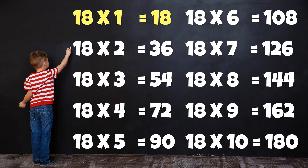Table of 18: 18×1=18, 18×2=36, 18×3=54, 18×4=72, 18×5=90, 18×6=108, 18×7=126, 18×8=144, 18×9=162, 18×10=180.